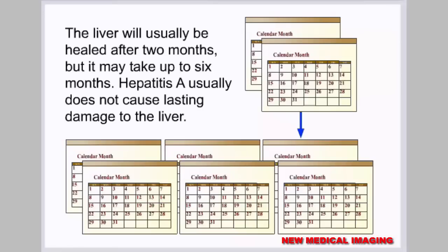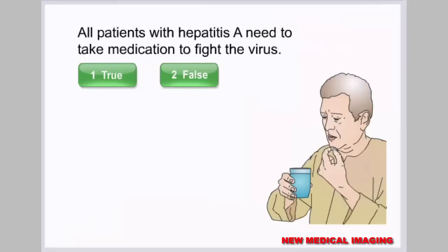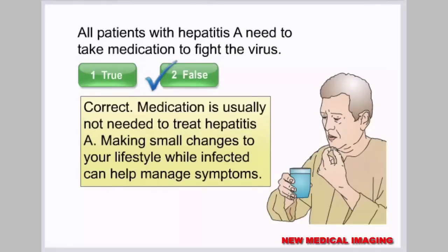The liver will usually be healed after 2 months, but it may take up to 6 months. Hepatitis A usually does not cause lasting damage to the liver. Quiz review: The statement that all patients with hepatitis A need medication to fight the virus is false — medication is usually not needed. Making small lifestyle changes while infected can help manage symptoms.